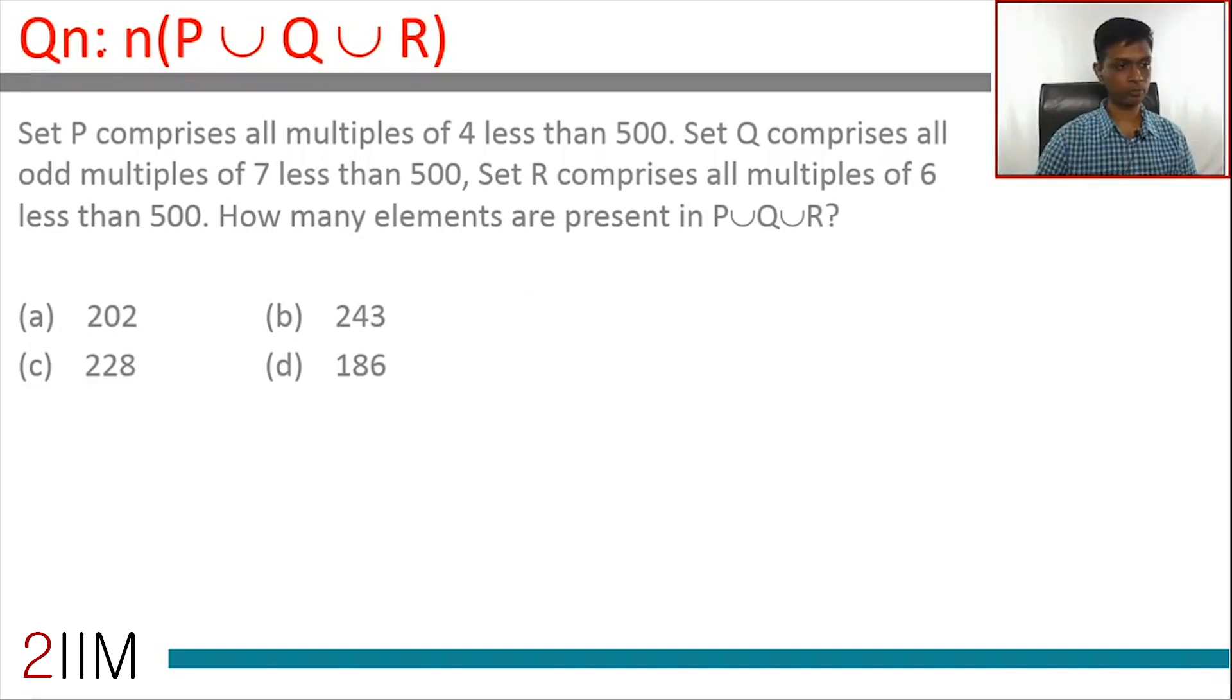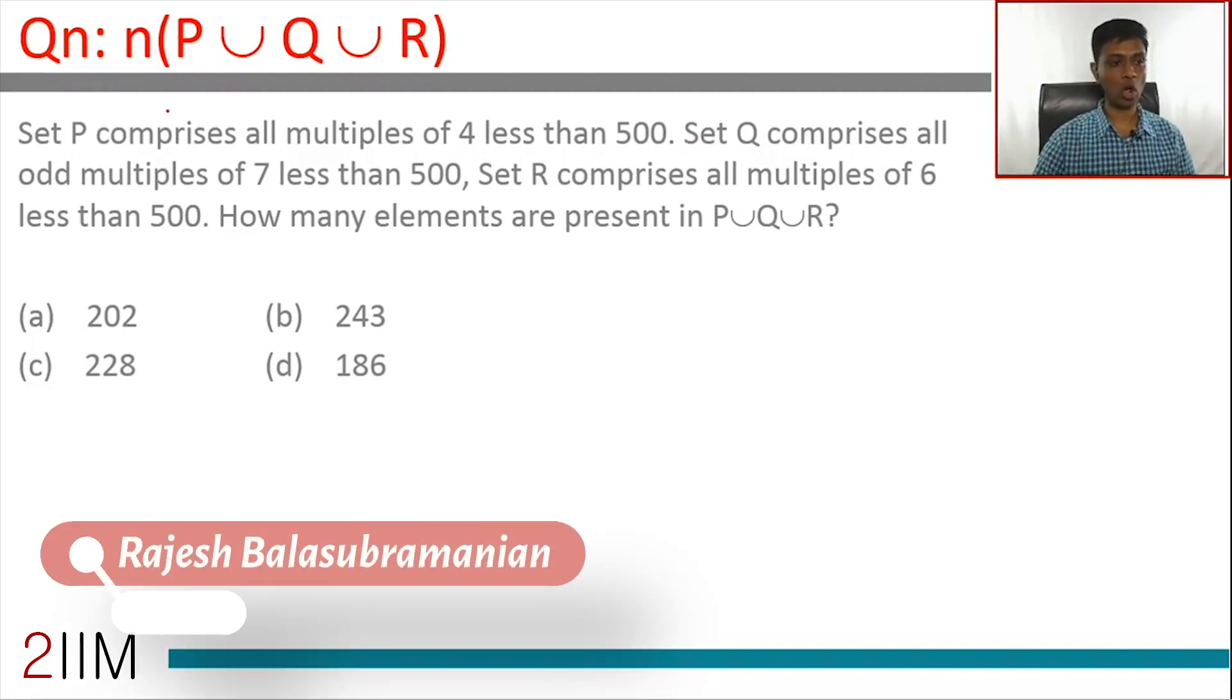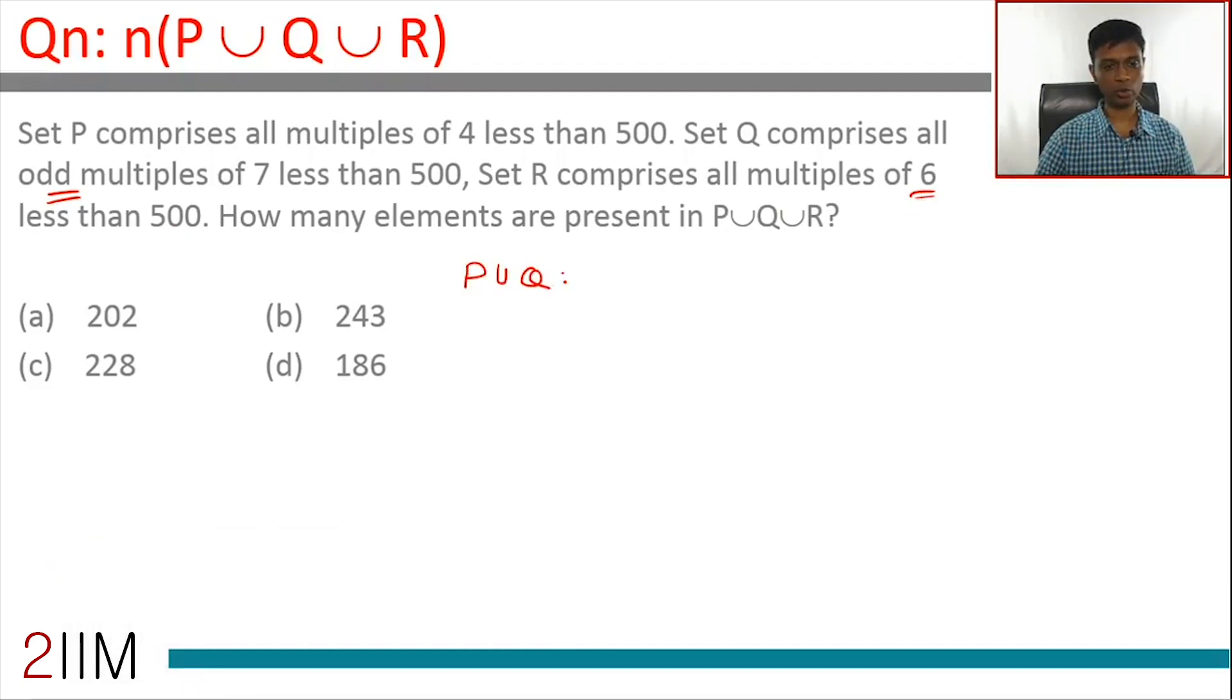Set theory first question. Set P comprises all multiples of 4 less than 500. Set Q comprises all odd multiples of 7 less than 500. Set R comprises all multiples of 6 less than 500. How many elements are there in P union Q union R?